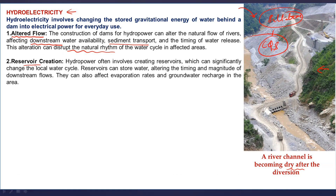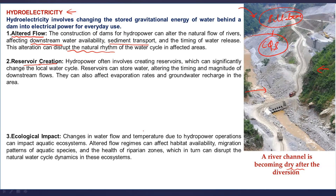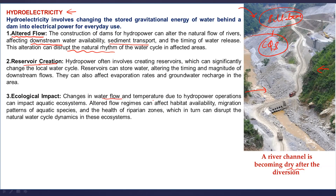Reservoir creation itself is an important issue. Creating reservoirs changes the magnitude of streams and stores water, changing its normal cycle. Evapotranspiration rates also change alongside. The ecological impact includes changes in water flow and temperature fluctuations, which affect aquatic ecosystems. The migration of species and the health of riparian zones are both impacted, which in turn can disrupt natural water cycle dynamics. It is a multitude of systems that we are analyzing here.